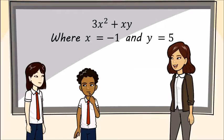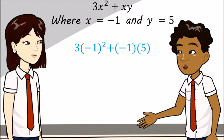Now you try this one. 3x squared plus xy where x is minus 1 and y equals 5. 3 times negative 1 squared plus negative 1 times 5. That equals 3 minus 5 which equals negative 2.